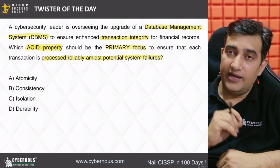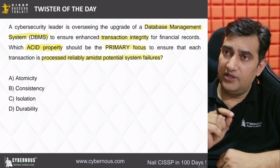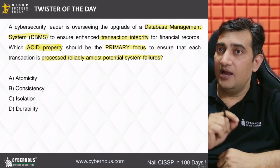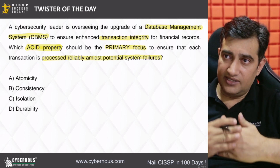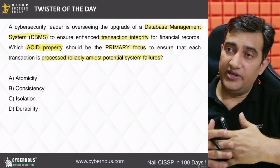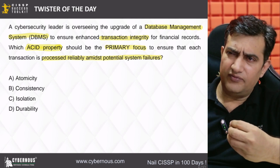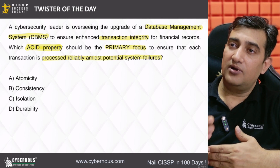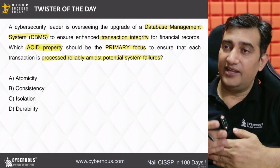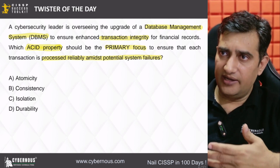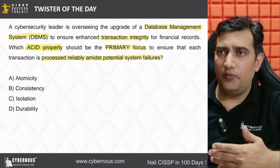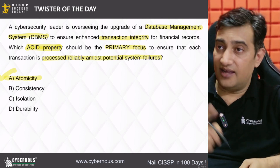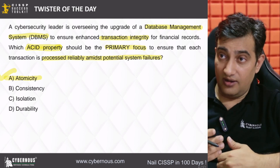In our question, they ask which ACID property should be the primary focus to ensure that each transaction is processed reliably amid system failure. If a transaction is happening and some component fails in the middle, the transaction has to come back to the previous state — as if the transaction never happened — returning to zero state. That property is called atomicity. Atomicity is the right answer here.